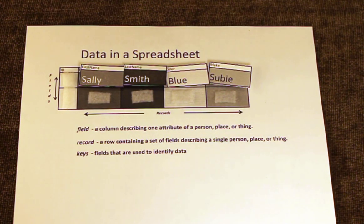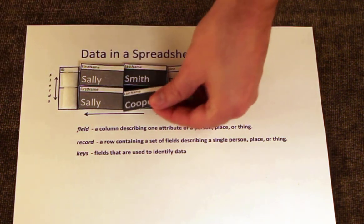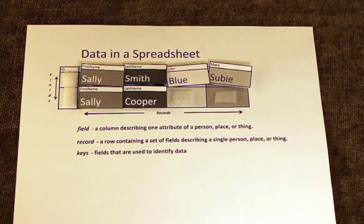If our customer Sally gets married and changes her name, duplicate records may be created. How do we know which Sally is the real Sally?